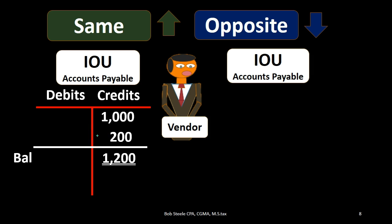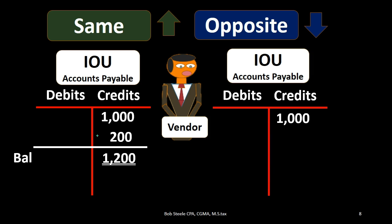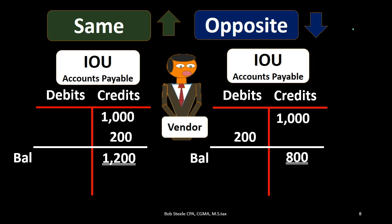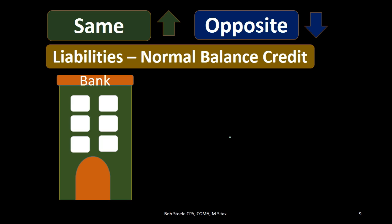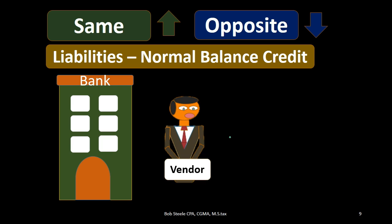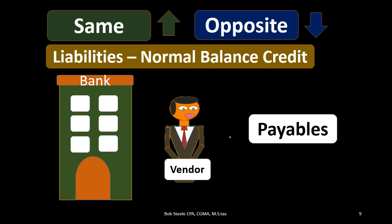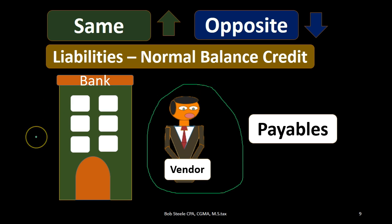If accounts payable has a beginning credit balance of $1,000 and we want to make it go down, we apply the one rule and do the opposite — a debit of $200 — bringing it down to $800. Credits are still winning but by less. When would we make accounts payable go down? When we pay off the accounts payable. Other liabilities like loans act the same way, having a normal credit balance.